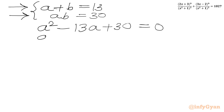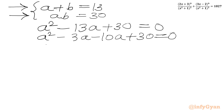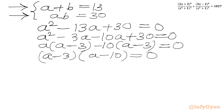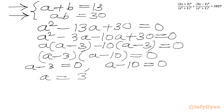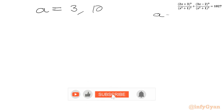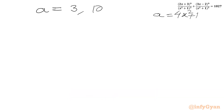Now we can use the method of factorization. We split -13a as -3a - 10a: a² - 3a - 10a + 30 = 0. From the first two terms, a is common giving a(a - 3), and -10 is common from the last two giving -10(a - 3). So we get (a - 3)(a - 10) = 0. Therefore either a = 3 or a = 10, where a was our substitution: a = (4x² + 12x + 9) / (x² + 1).